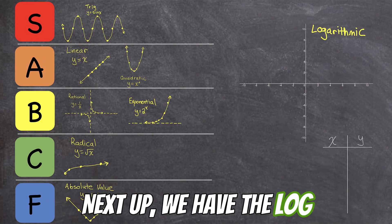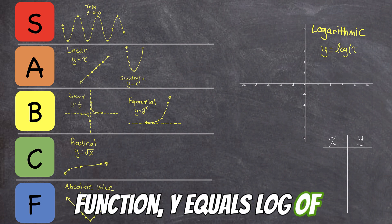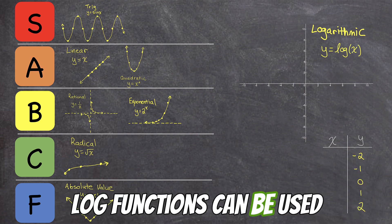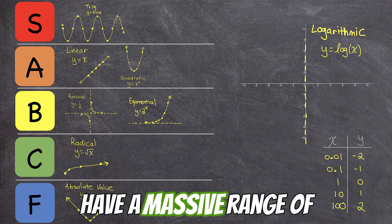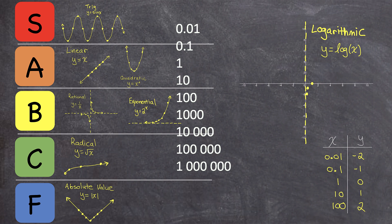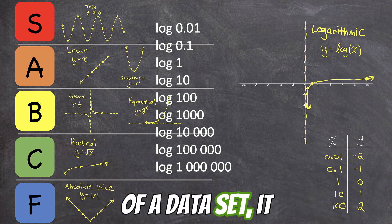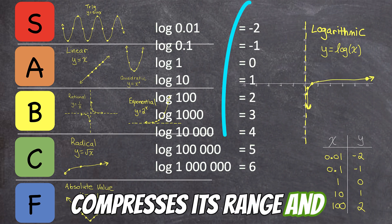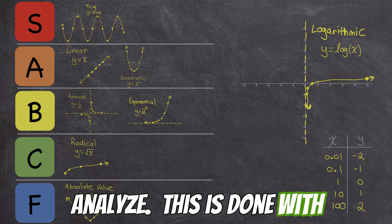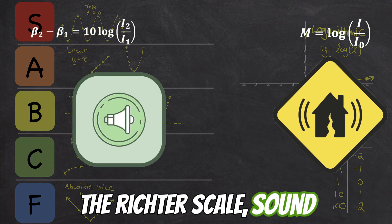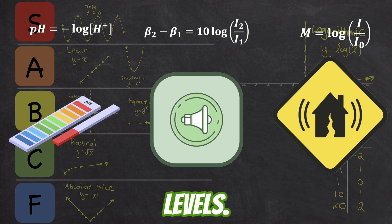Next up, we have the log function, y equals log of x. Log functions can be used to analyze values that have a massive range of magnitudes. By taking the logarithm of a dataset, it compresses its range and makes it easier to analyze. This is done with the Richter scale, sound intensities, and also pH levels.